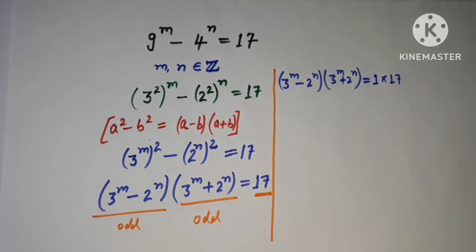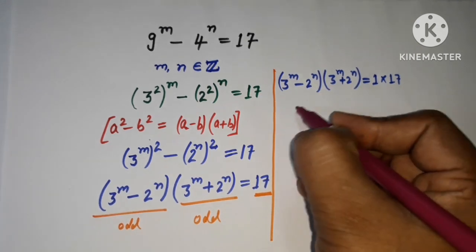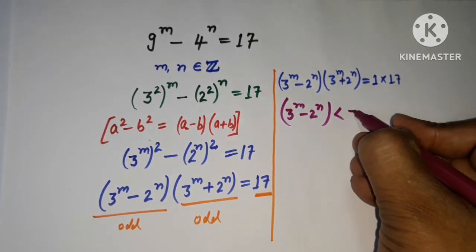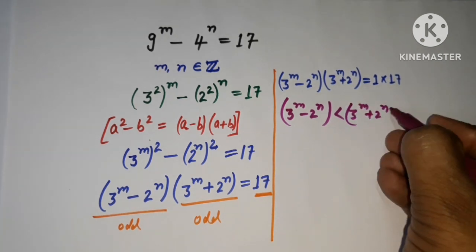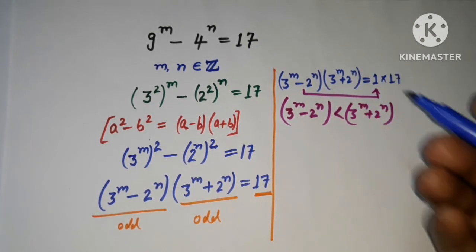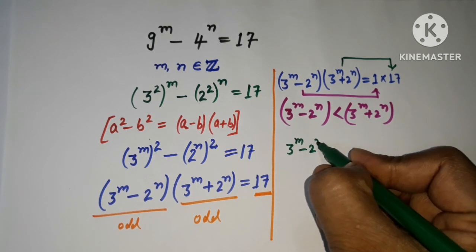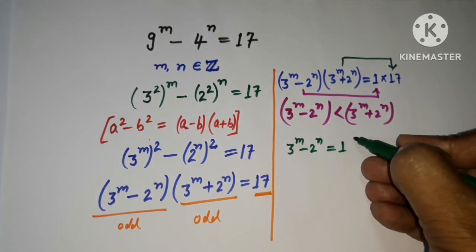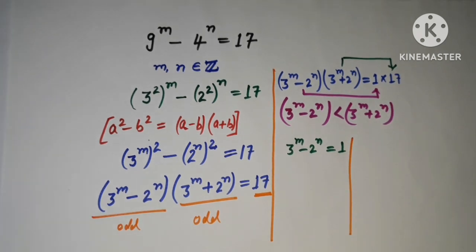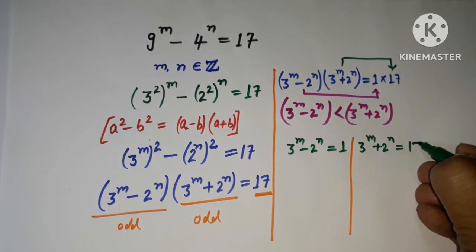So here it is a product of two odd numbers, 1 and 17. Obviously the first factor has a lesser value than the second because it has the negative sign. So 3 to the power m minus 2 to the power n is less than 3 to the power m plus 2 to the power n. So obviously we use 1 for the first factor and 17 for the second.